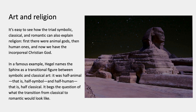It's easy to see how this triad — symbolic, classical, and Romantic — can also be used to explain religion, because it's all the arts and all aspects of culture that Hegel is attempting to explain. In terms of religion, first there were animal gods, then human ones, and now we have the incorporeal Christian god. There's a famous example in this philosophy of history in which Hegel names the Sphinx as a transitional figure between symbolic and classical art. It was half animal — that is, half simple — and half human, that is, half classical.